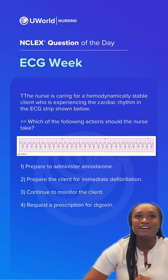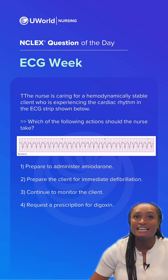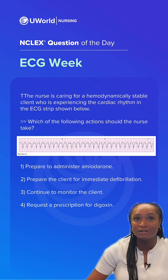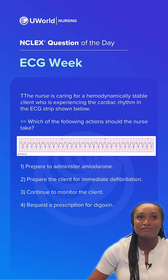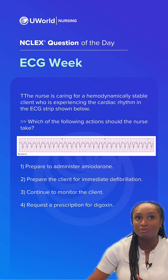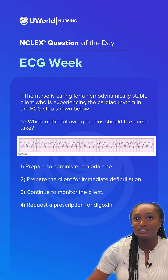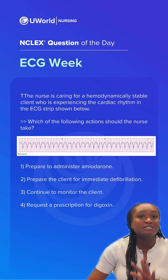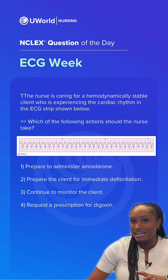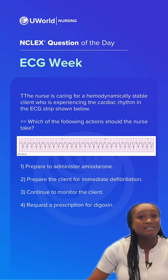The nurse is caring for a hemodynamically stable client who's experiencing the cardiac rhythm in the ECG strip shown below. Which of the following actions should the nurse take? Take a moment to pause the video, drop your answers down in the comments, and let me know what you guys think.